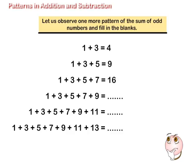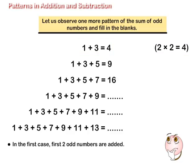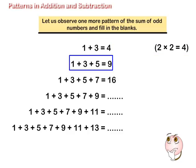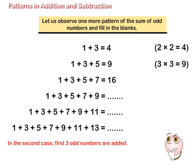Here, 1 plus 3 is equal to 4. In this case, first two odd numbers are added. 1 plus 3 plus 5 is equal to 9. In this case, first three odd numbers are added.